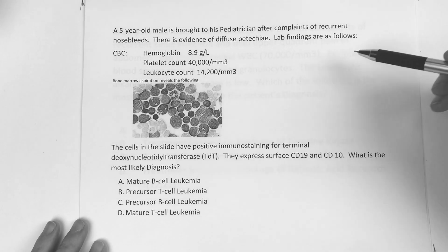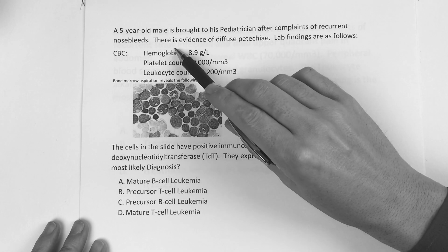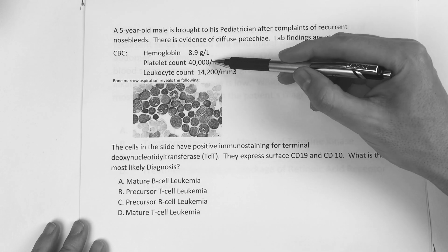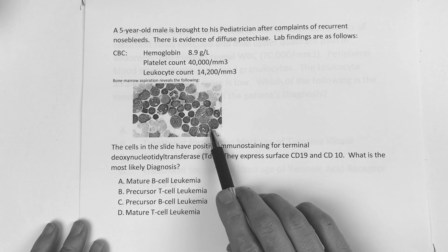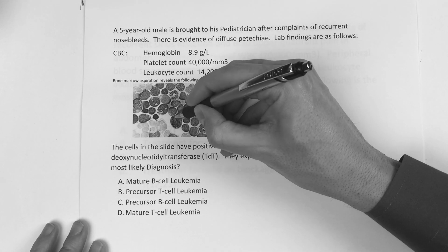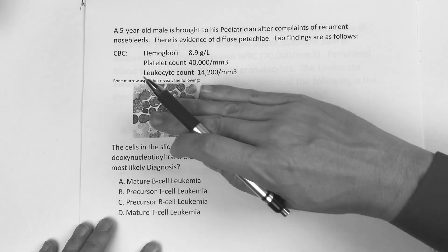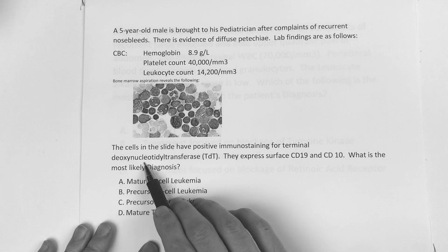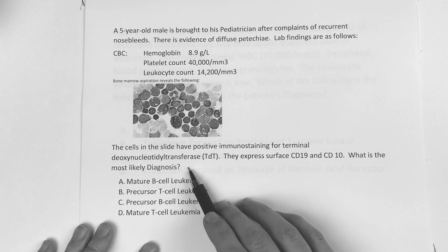All right, so the first question reads: A five-year-old male is brought to his pediatrician after complaints of recurrent nosebleeds. There's evidence of diffuse petechiae. Lab findings are as follows: Hemoglobin 8.9, platelet count around 40,000, leukocyte count 14.2. The cells in the slide have positive immunostaining for terminal deoxynucleotidyl transferase, or TDT. They express surface CD19 and CD10. What is the most likely diagnosis?